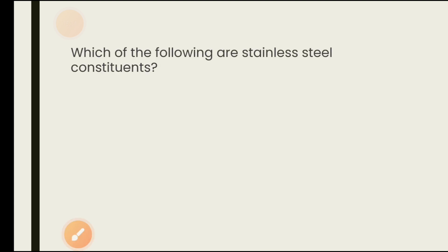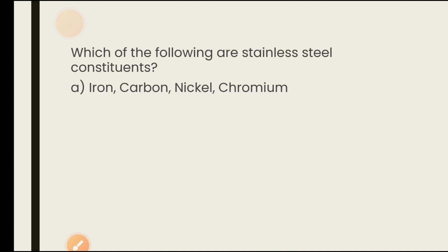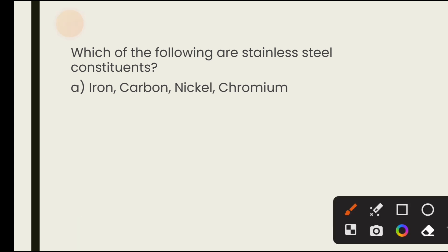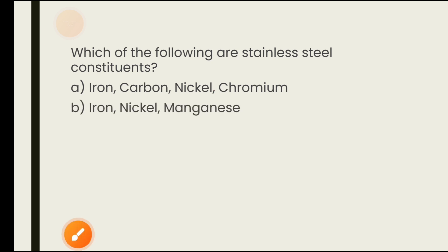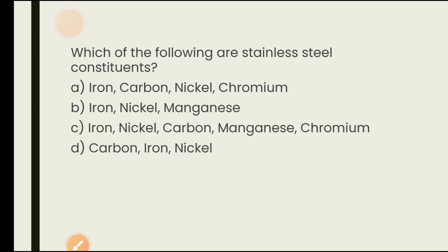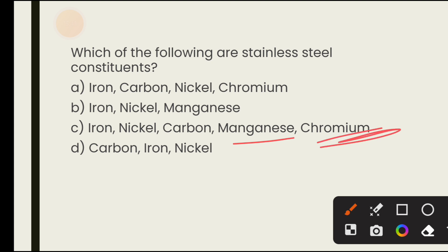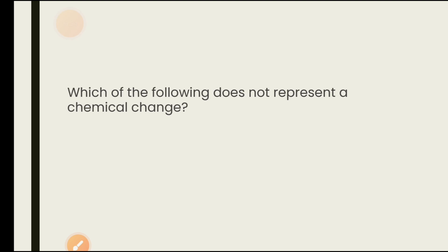Which of the following are constituents of stainless steel? Options include iron, carbon, nickel, chromium, and manganese is also found. The most accurate answer is option C — iron, nickel, carbon, manganese, and chromium.